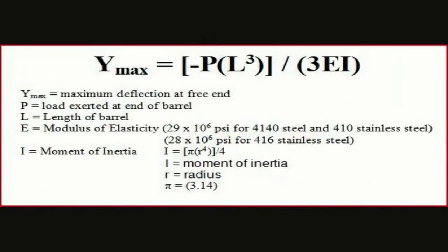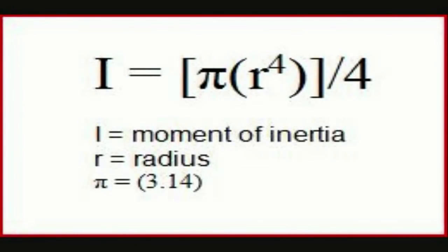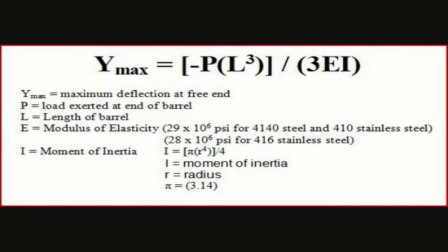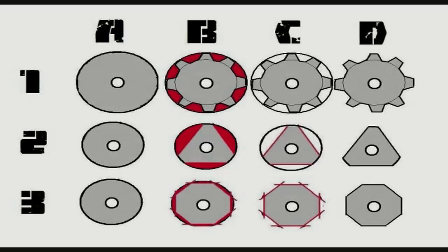Basically it comes down to the moment of inertia, where the primary factor is the radius of your barrel. The greater the radius, the greater your moment of inertia, which is the engineering way of quantifying rigidity. You can plug that moment of inertia into your formula and calculate the maximum deflection at the free end of a rifle barrel under different load conditions. We don't want to get into too much calculus today, but basically your moment of inertia is determined by the radius. Here's a set of pictures of a few different barrel profiles we're going to cover.